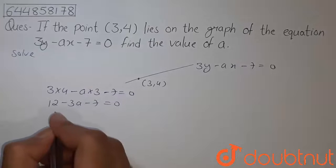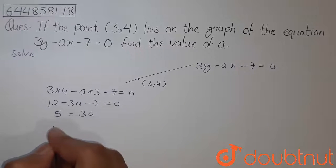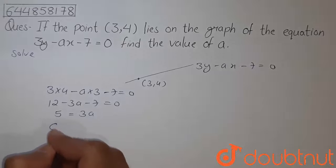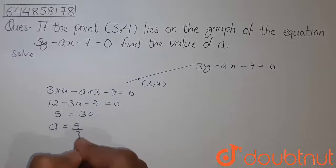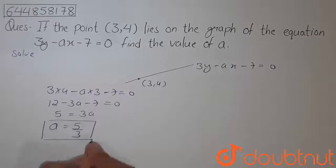Now 12 minus 7 will be 5, and shifting 3 to the denominator of 5, we get the value of a as 5 by 3. So the value of a is 5/3. This is our answer. Thank you.